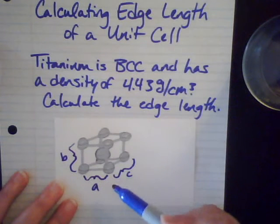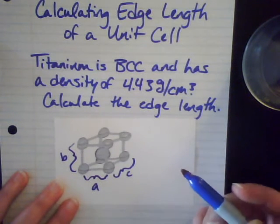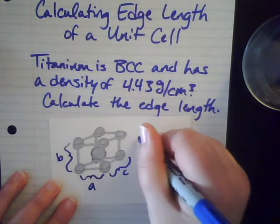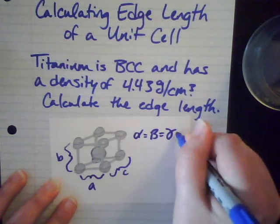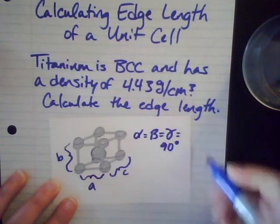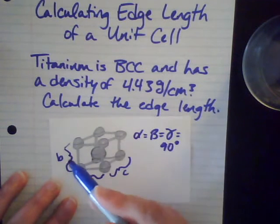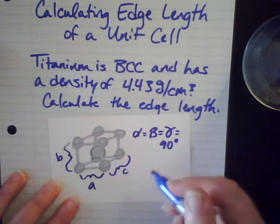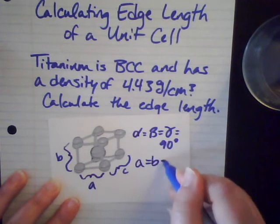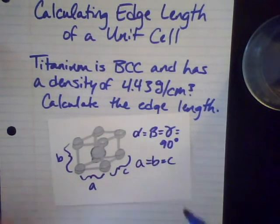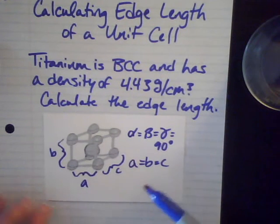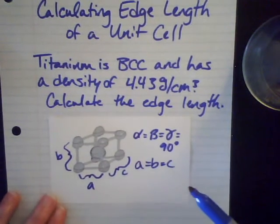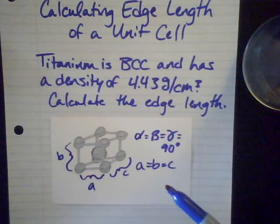And we know that because it's cubic, all of the angles are going to be equal to 90 degrees. So my alpha is equal to my beta is equal to my gamma is equal to 90 degrees. And then my a is going to be equal to my b is equal to my c because it's cubic. And that's what we're solving for.